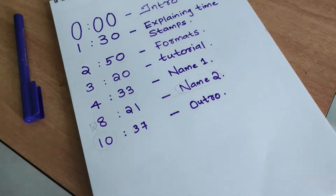I want to show you a timestamp in that format. This option is automatically enabled. So let's get started. Guys, I want to show you this feature in a real working sample.